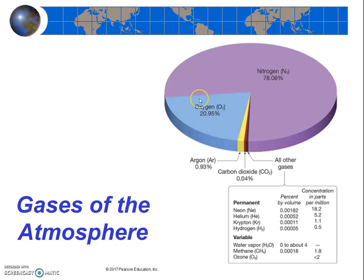So nitrogen, oxygen, argon, and a host of other gases are permanent gases — their concentrations do not change much over space and time. Variable gases, on the other hand, are gases that change in abundance from place to place and from time to time. Notably, they are present only in very small amounts; however, they can have huge effects on climate and on human and environmental health. The diagram here lists three very important variable gases: water vapor, methane, and ozone. They should have also likely included carbon dioxide, as that gas is variable as well. You should briefly be able to describe the importance of each one.